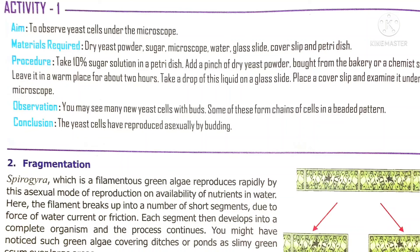The next method is fragmentation. You might have heard of Spirogyra, a green algae which spreads on pond water or in water ditches — that is, in watery areas. Spirogyra undergoes asexual reproduction by fragmentation. Fragmentation means the division of one organism into many parts, or segments. Each segment then develops into a complete organism and lives independently.